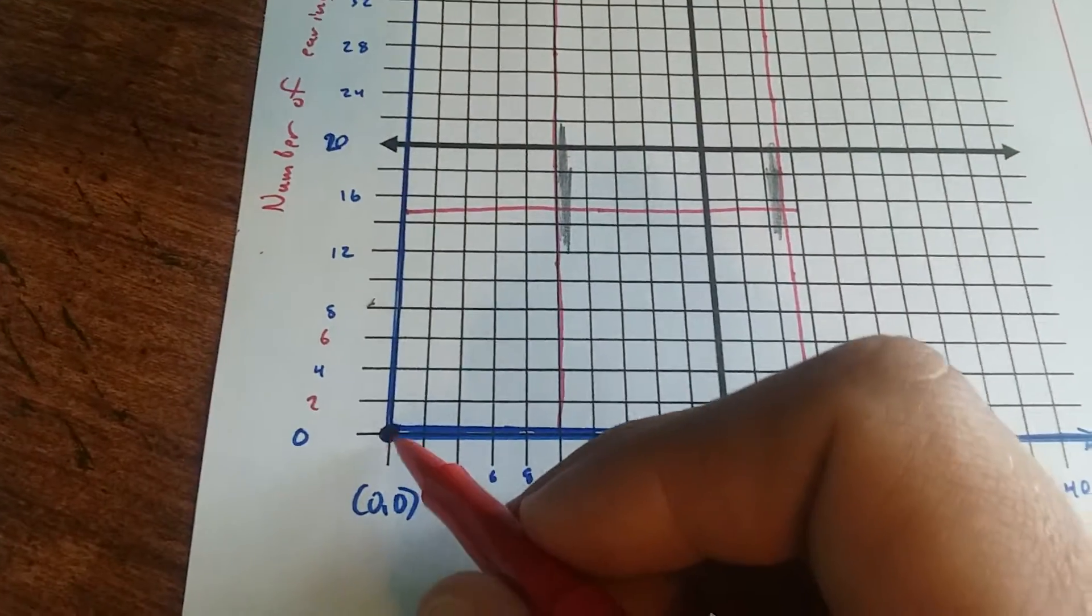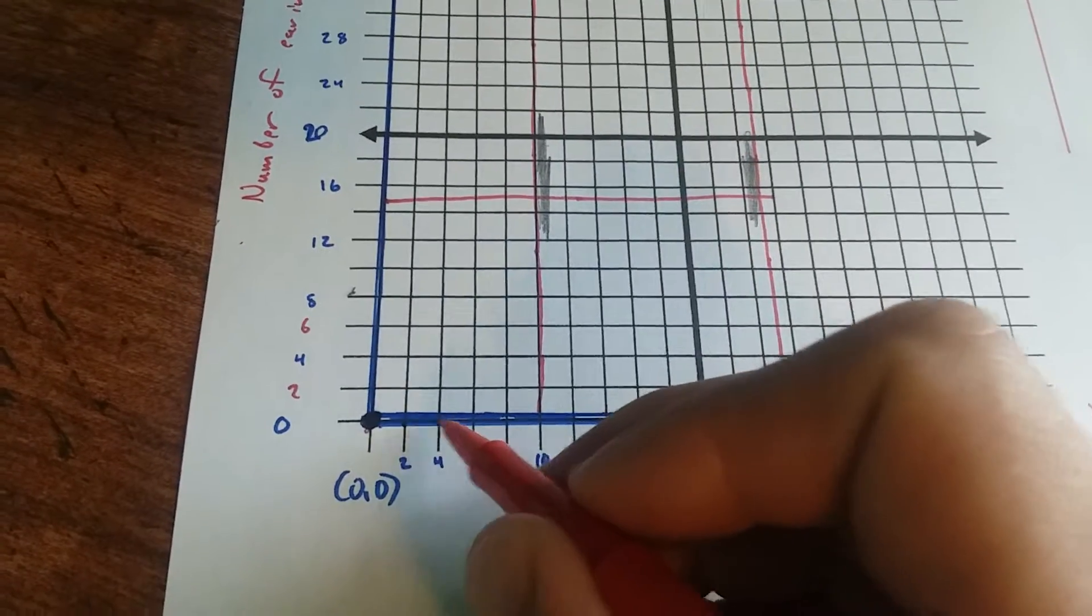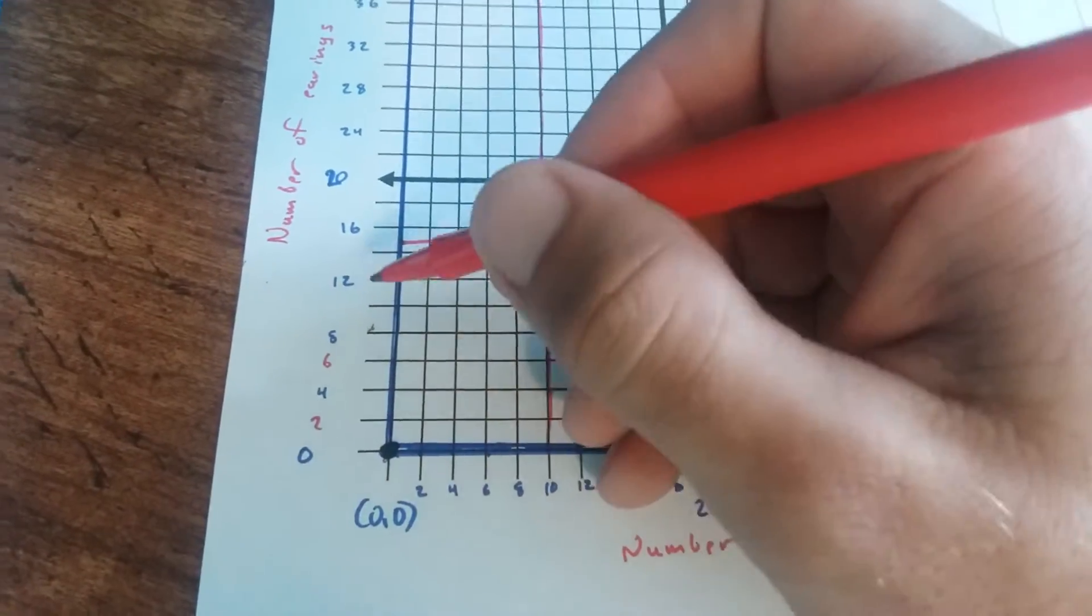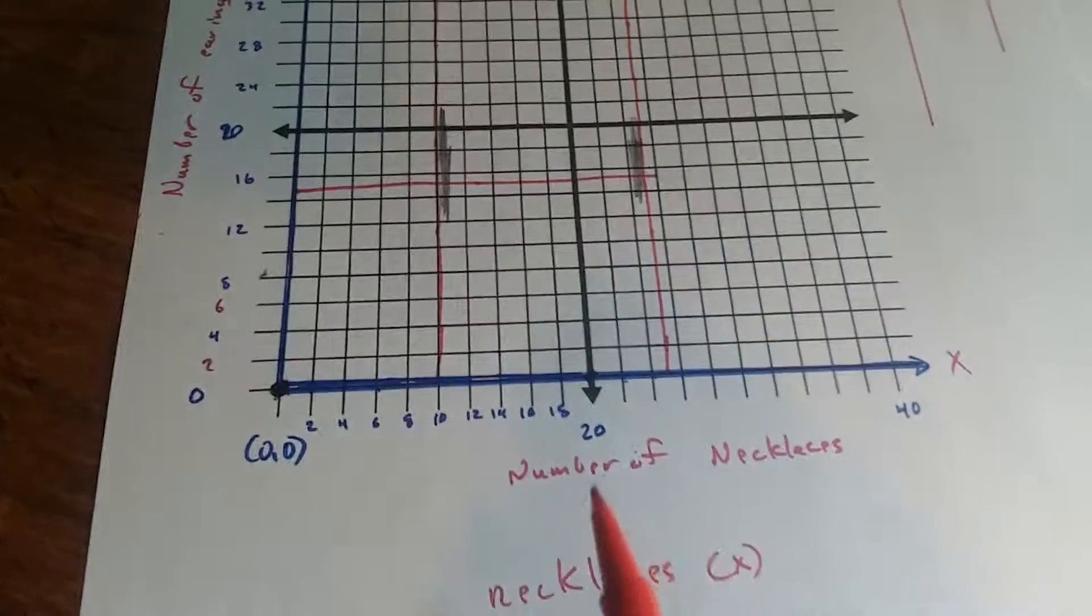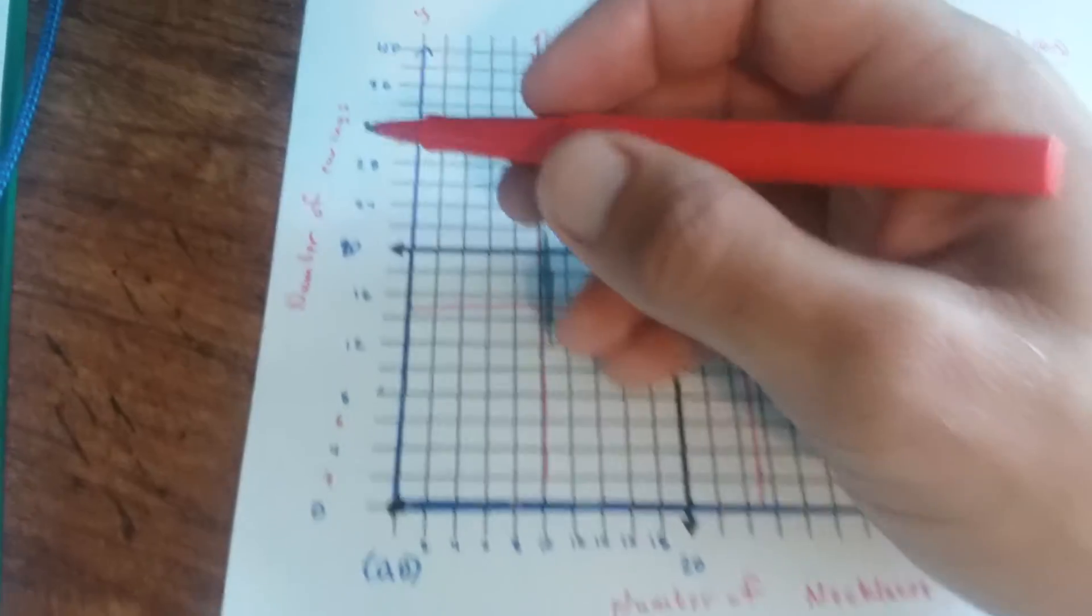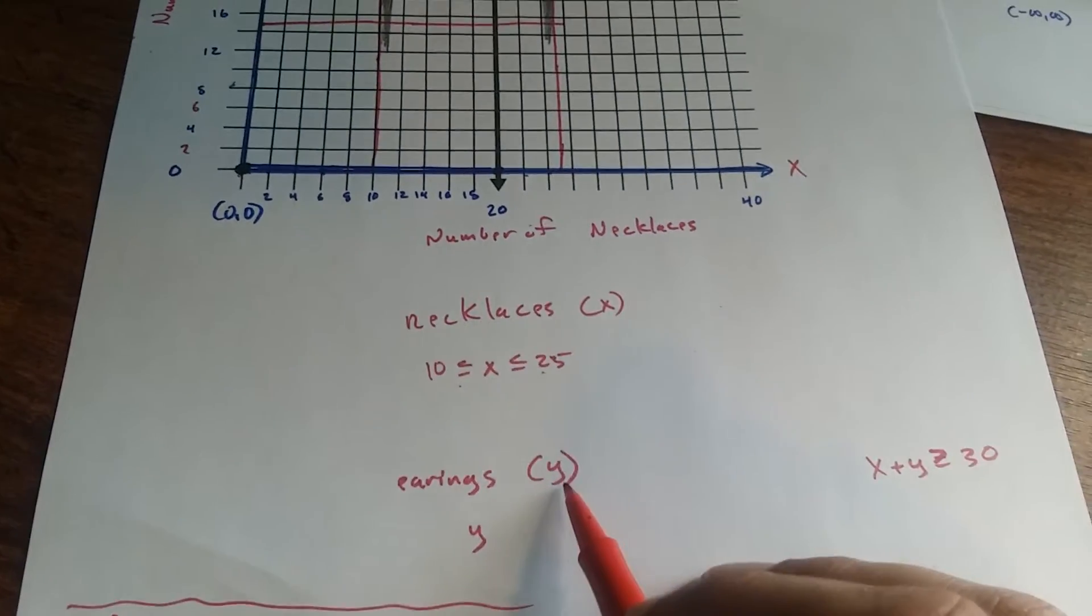I know I've kind of changed it, but this point here is 0, 0. And this is 2, 4, 6, 8, and so on. And then we have 0, 2, 4, 6, 8, and so on going upwards. So my X axis is my number of necklaces. My Y axis is my number of earrings. And that's why necklaces is X, earrings is Y.